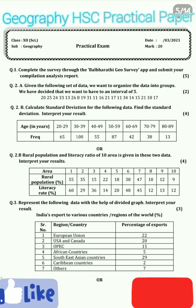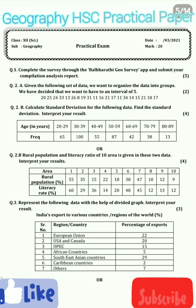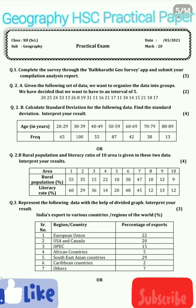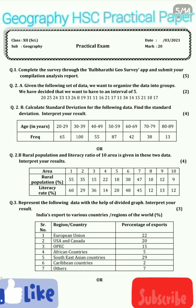Section A is on data organization. You are given a dataset and you have to group it into intervals. You find the smallest and highest values, then make groups with a difference of 5 — so intervals like 5 to 10, 10 to 15. If the interval is 10, then it would be 10 to 20, 20 to 30, and so on.